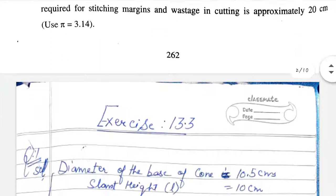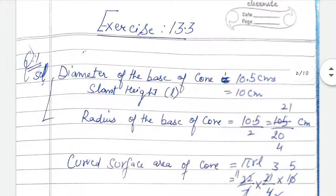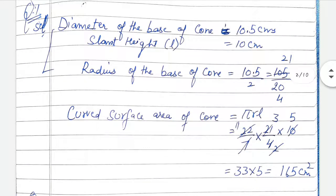Everything is given. First, diameter of the base is 10.5 centimeter, so from diameter we find radius. Radius is half, so 10.5 divided by 2. I removed the decimal and put zero below — radius becomes 21/4. Slant height is 10 centimeter. So curved surface area = πrl = (22/7) × (21/4) × 10. After calculations, our answer is 165 centimeter square.